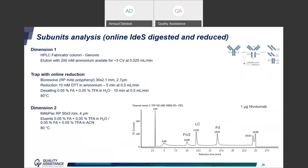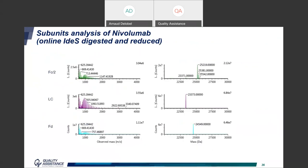As with the previous workflow, we included the online reduction step — all conditions remaining the same, with an additional DTT flow flushed through the trap column while the compound is trapped. We obtain three peaks on the mass chromatogram: Fc, LC, and Fd. Here another antibody, nivolumab, is used. The presence of the three chains is confirmed by MS: in green the Fc at ~25 kDa with different glycoforms visible, the middle chain is the light chain, and at the bottom the Fd at ~25 kDa.